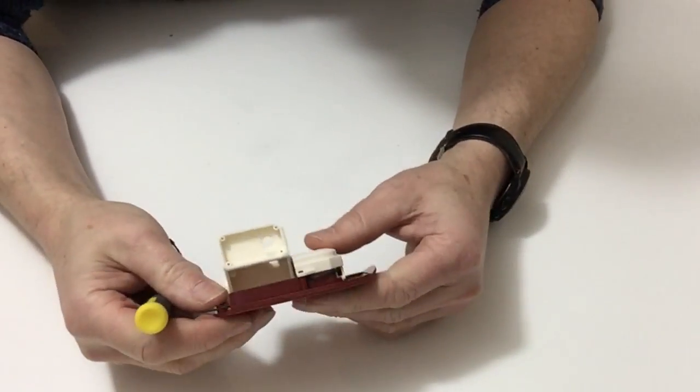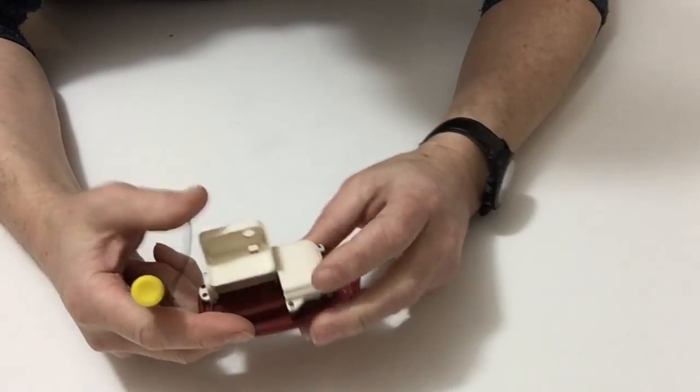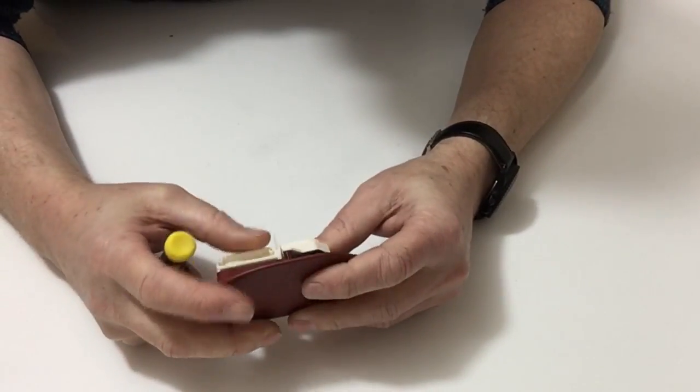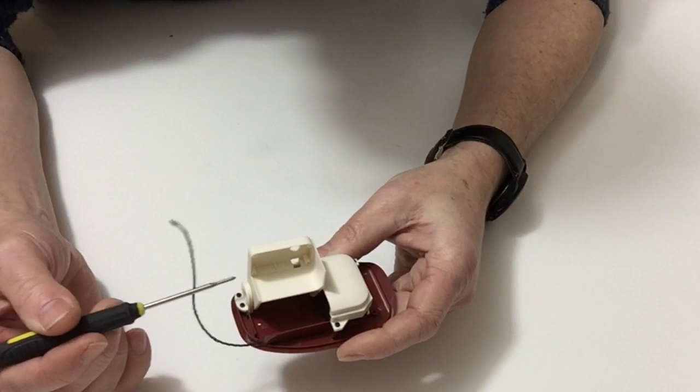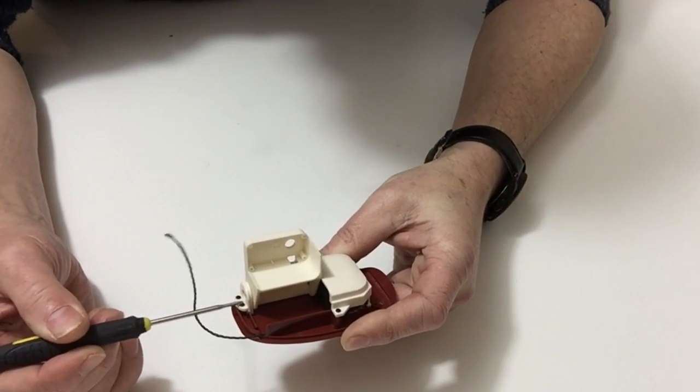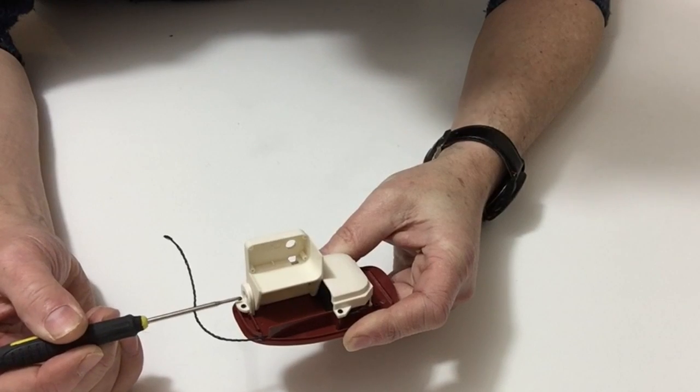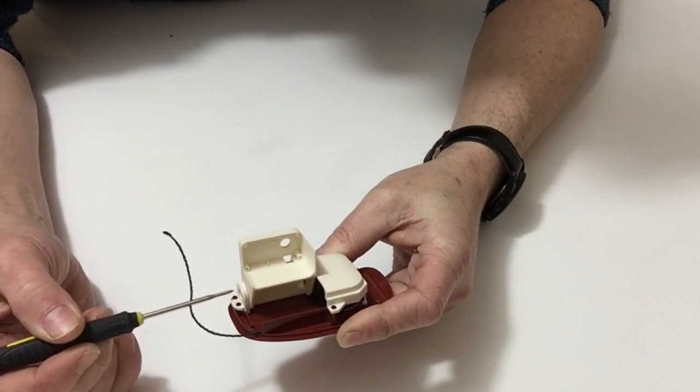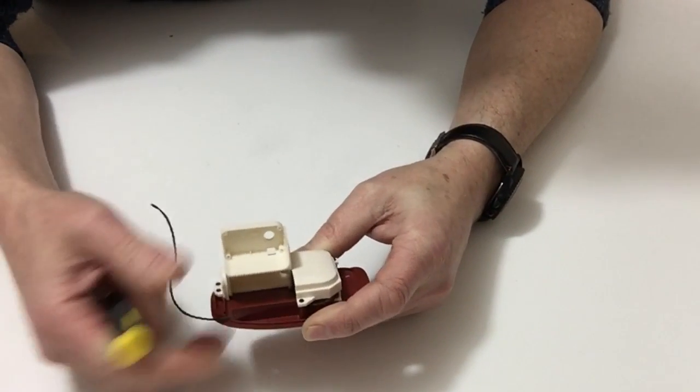Now as you can see, we have secured the ankle servo assembly down and we have also secured the joint, and we have used the M2 by 6mm button head screws to do that.